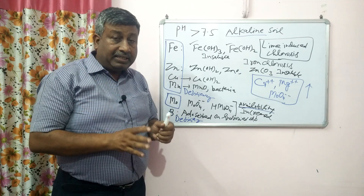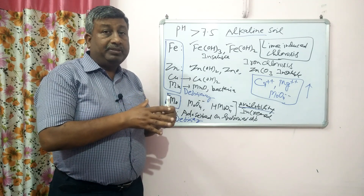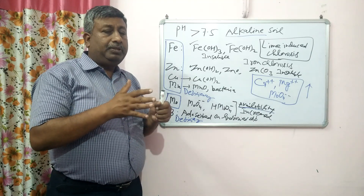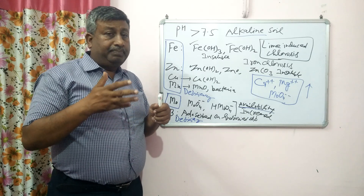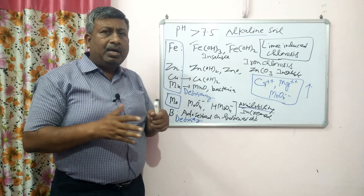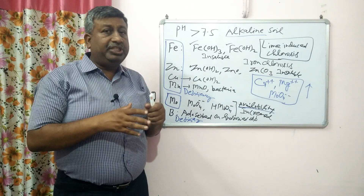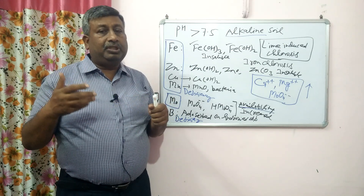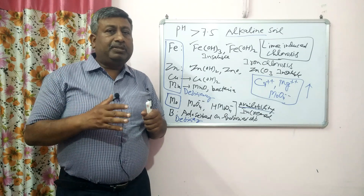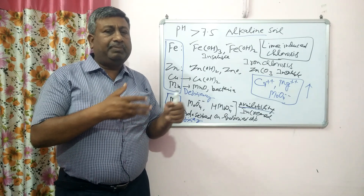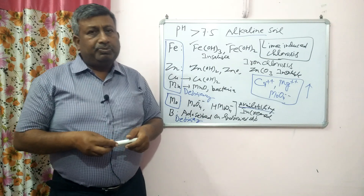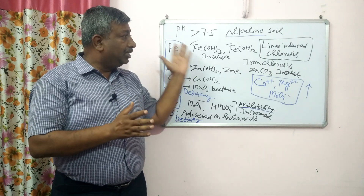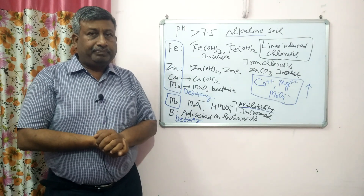That is why reclamation of such soils is very important — to bring soil pH down to near neutral. If high pH is due to excessive soluble salts, then leaching is required. If there is excess sodium, then amendment with gypsum is required to replace sodium. High pH soils are not favorable for crop growth because of nutrient imbalance. Thank you very much.